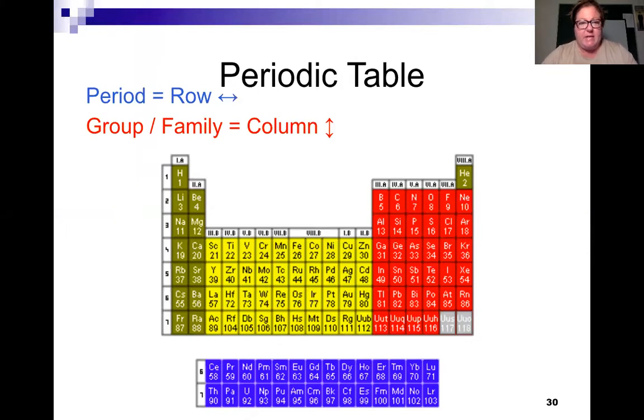Here's the periodic table. We've talked about it before, that the rows that go horizontal are periods, and the columns that are vertical, up and down, are the groups, or sometimes they're called families.